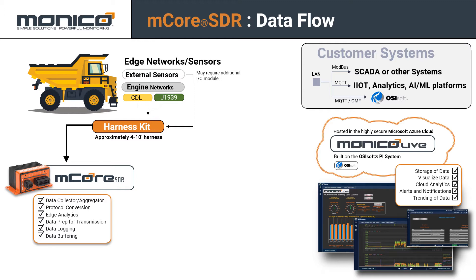On the bottom left, we have an mCore device used to collect data from your asset. The mCore handles data collection and aggregation, protocol conversion, edge analytics, prepping data for transmission, data logging, and data buffering. Data buffering is imperative when remotely monitoring over potentially inconsistent network connections to minimize the risk of data loss for use in analytics.